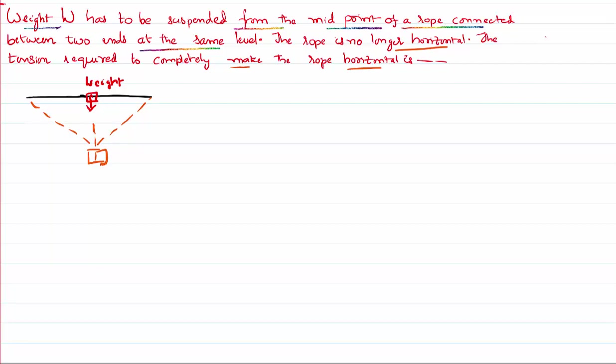Let us draw a diagram once again to solve the problem. So he is saying that there is a horizontal rope. It's no more horizontal. It has changed its shape because you have suspended a weight as I have explained earlier. Here is the weight that you have suspended whose mass is M therefore the weight will be Mg.